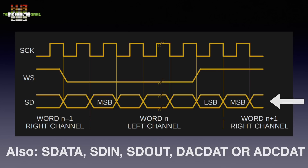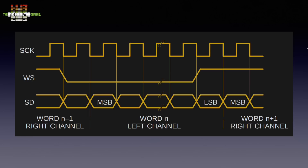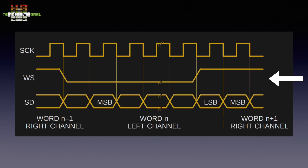Looking at the timing diagram: the serial clock runs at a sampling rate, as indicated by the dotted vertical lines. The word select indicates whether the next serial data bits are for the left or the right channel — zero is left, one is right. The serial data is a pure PCM signal for alternating channels as indicated by the word select line.